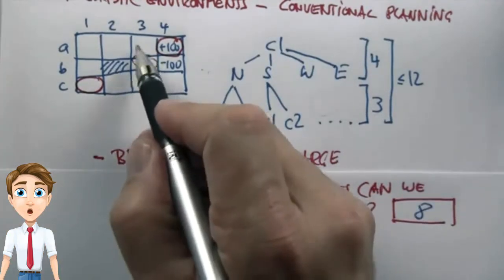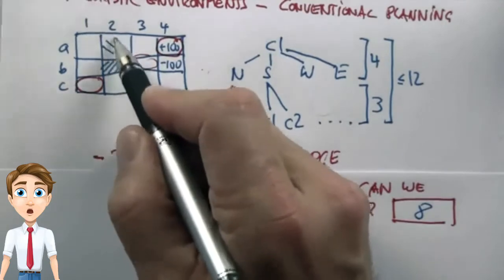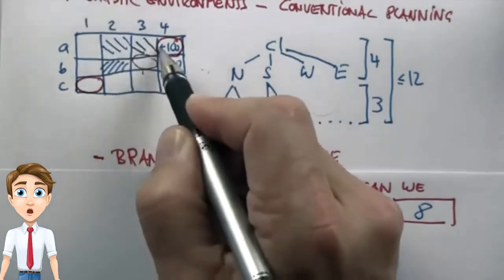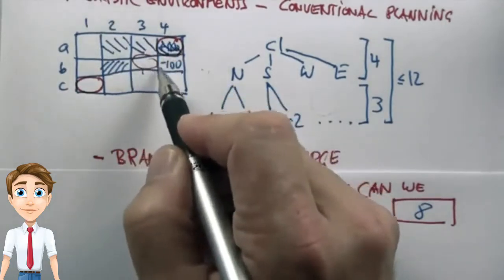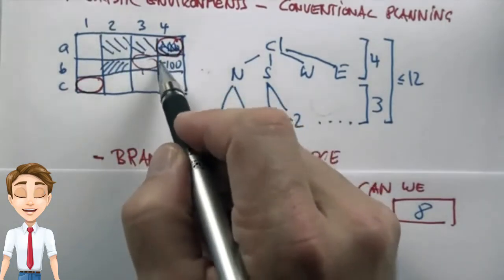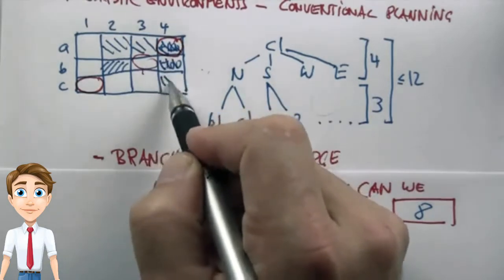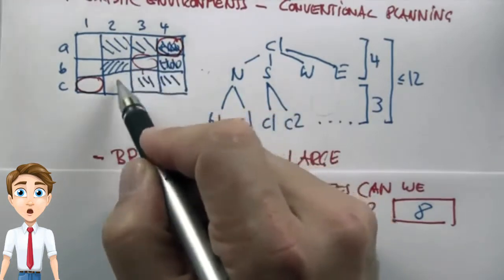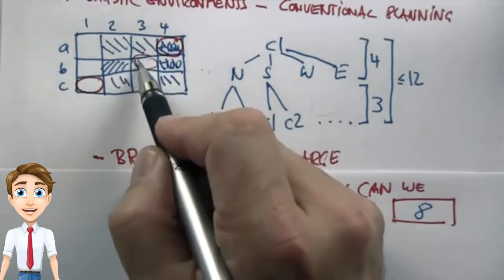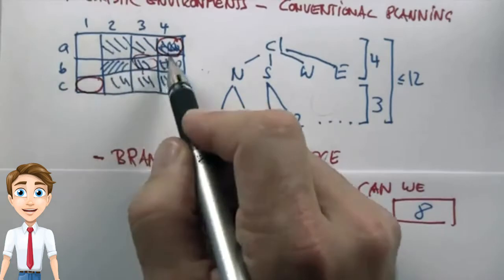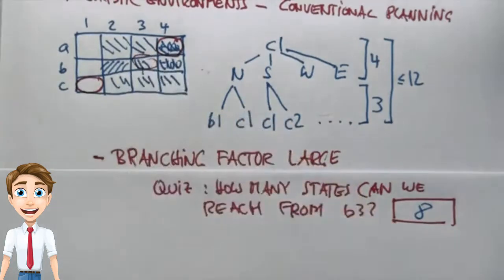If you go north, you might reach this state over here, this one over here, this one over here. If you go east, you might reach this state over here, this one, this one, this one. When you put it all together, you can reach all of those 8 states.